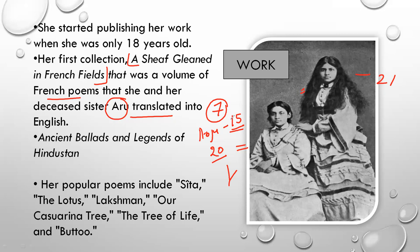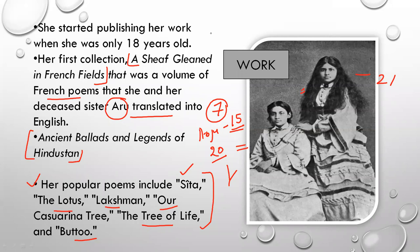Her collection 'Ancient Ballads and Legends of Hindustan' is her second collection. There are many popular poems from this collection, including: Sita, The Lotus, Lakshman, Our Casuarina Tree, The Tree of Life, and Baugmaree. These poems are very important because they are frequently asked in exams — for instance, identifying the poet. So as students of Indian writers, you must take note of them.